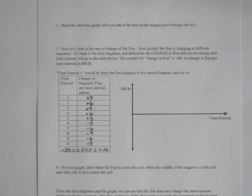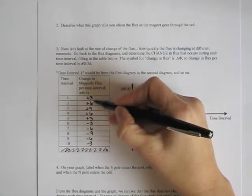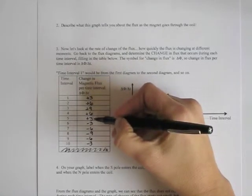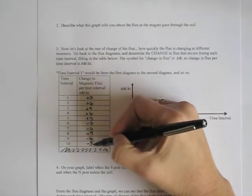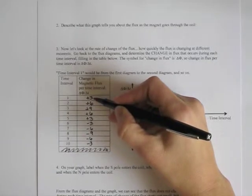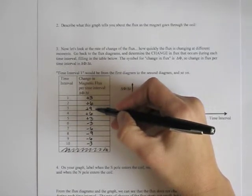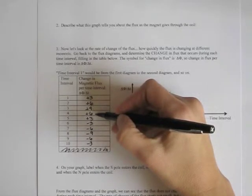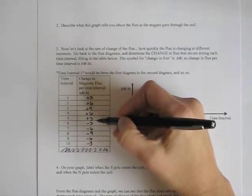Once your chart is complete, take a look at the values. We can see that these numbers increase from positive 3 to positive 9 and then back to positive 3, and then negative — from negative 3 to negative 9 and then to negative 3. This tells us we don't have a constant rate of change. First the flux changes by 3, then by even more, and the rate of change is changing over time.